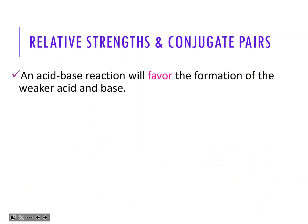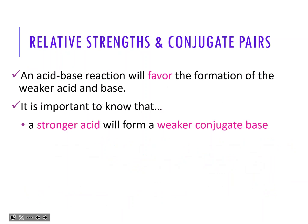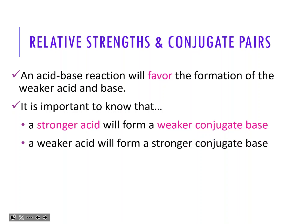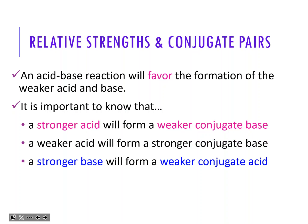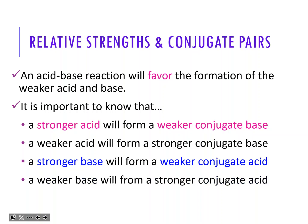Relative strengths: an acid-base reaction will favor the formation of the weaker acid and base. A stronger acid will form a weaker conjugate base - they're opposite each other. The weaker acid is going to form a stronger conjugate base. So the stronger base will form a weaker conjugate acid, and the weaker base will form a stronger conjugate acid. If the acid's strong, the conjugate base is weak; if the acid's weak, the conjugate base is going to be stronger.